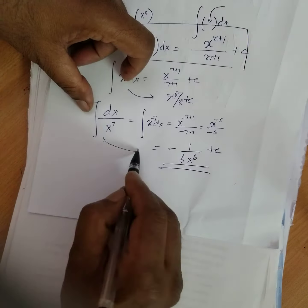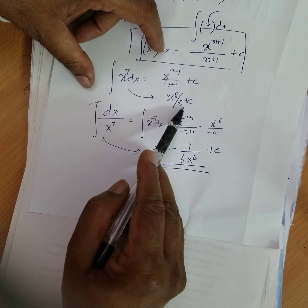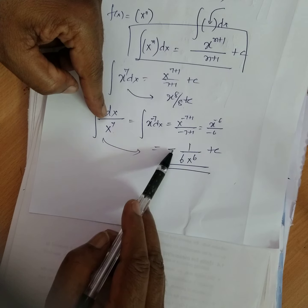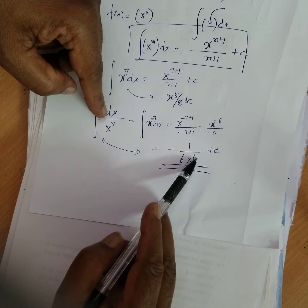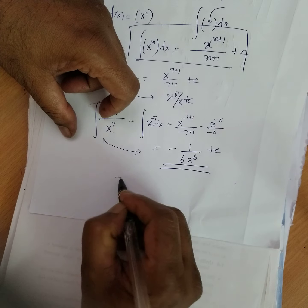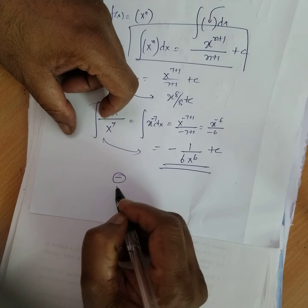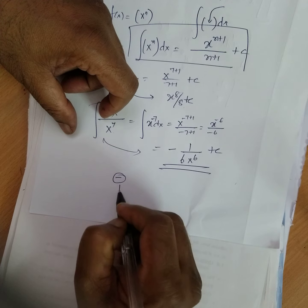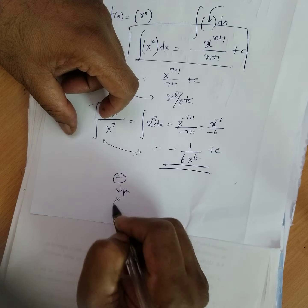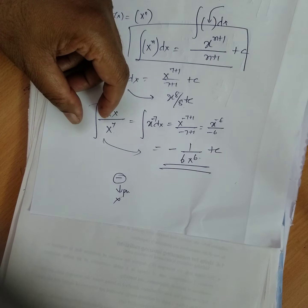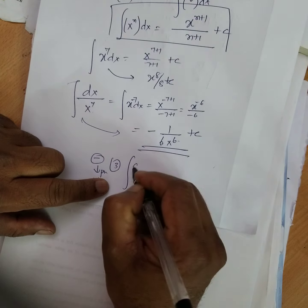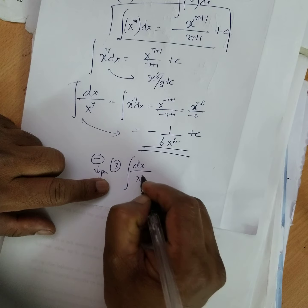Observe here: increase the power, divided by that power — that's for a numerator. If it is a denominator, change the sign, decrease the power, multiply by the decreased power. The shortcut is: change the sign, decrease the power. Now suppose we do this sum — dx by x to the power of 2.